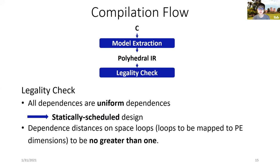Second, we require the dependence distance on loops that are to be mapped to different processing elements to be no greater than one. This property makes sure that the communication only happens between neighbor PEs that maintain the locality characteristics of systolic arrays.